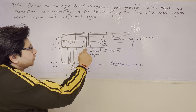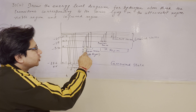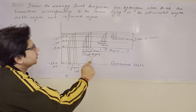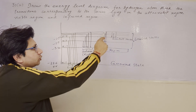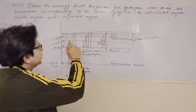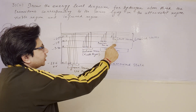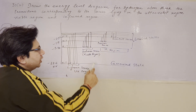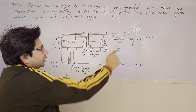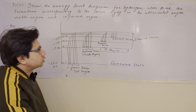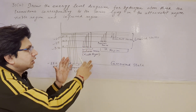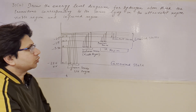Similarly, when there is a transition from a higher state to n equals to 2, we get the Balmer series in the visible region. If there is a transition from the higher state to n equals to 3, we get the Paschen series. When there is a transition from a higher state to n equals to 4, we get the Brackett series. The Balmer series corresponds to the visible region, and the Paschen and Brackett series correspond to the IR region.